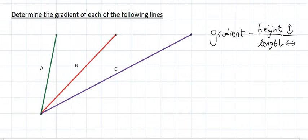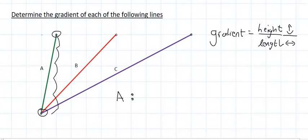Let's take lines A, B and C and see if we can work out the gradient. Let's start with A. Our first step would be to work out the height — it doesn't matter if you go from this point to this point or the other way around. If we look at the height, we'll see that it's going to be 5.